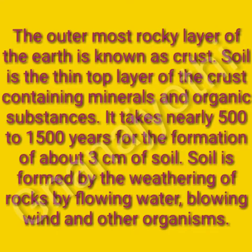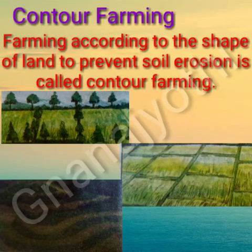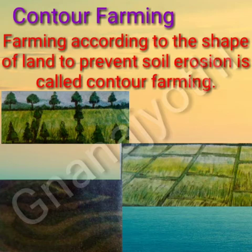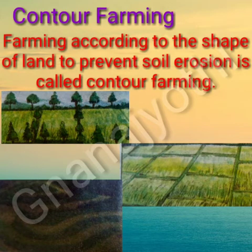Farming according to the shape of the land to prevent soil erosion is called contour farming. This helps preserve the soil and prevents it from being washed away.